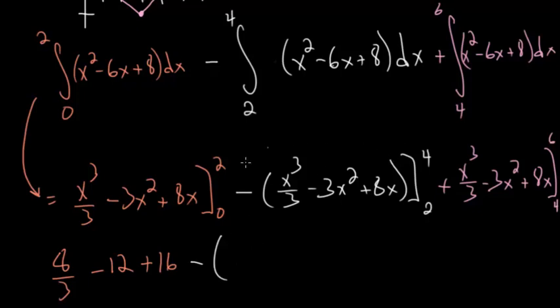Then we'll subtract. For this evaluation, we need to evaluate both the upper and lower bounds. Plugging in 4, we get 4 cubed over 3, so that's 64 thirds, minus 3 times 16, which is 48, plus 8 times 4, which is 32. Then we'll subtract off everything evaluated at 2: 8 over 3 minus 12 plus 16.